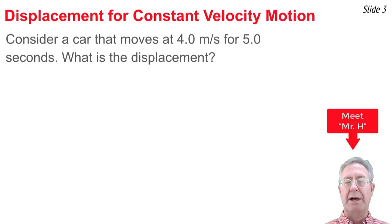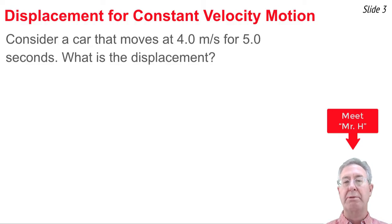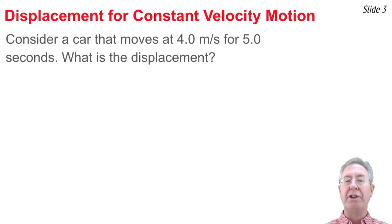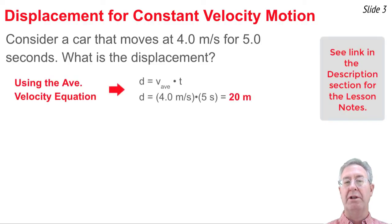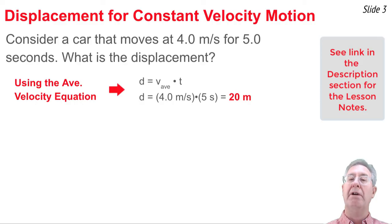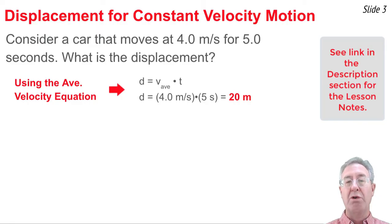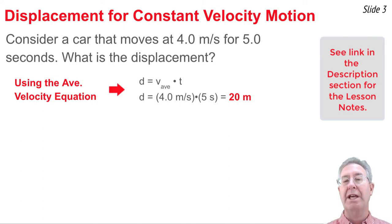Let's begin by considering this question: a car moves at 4 meters per second for 5.0 seconds — calculate the displacement. We'll solve this using the average velocity equation: displacement equals average velocity times time. For a car traveling at a constant velocity of 4.0 meters per second, that's both the average and the constant. Multiplying by 5 seconds, we get 20 meters as the displacement.